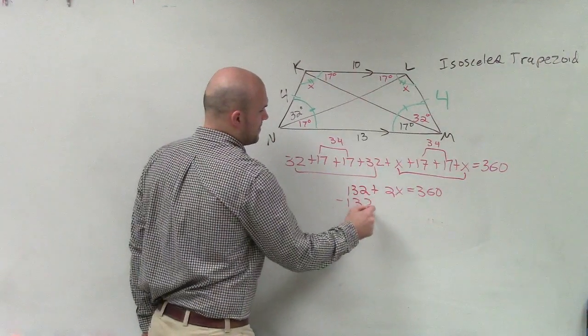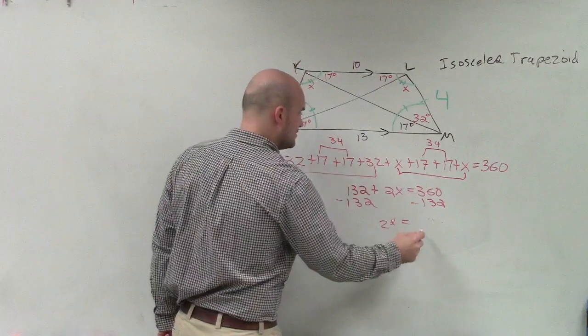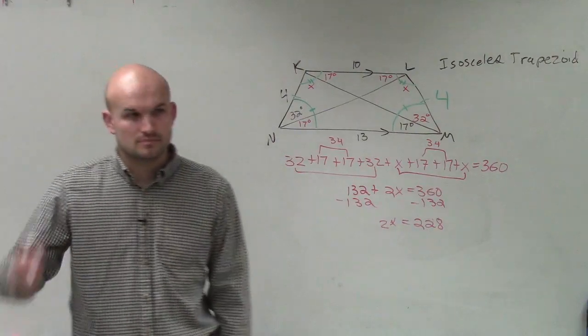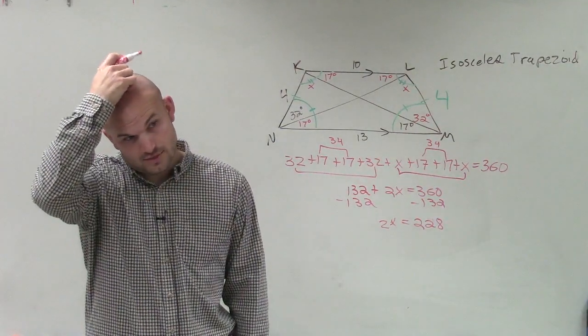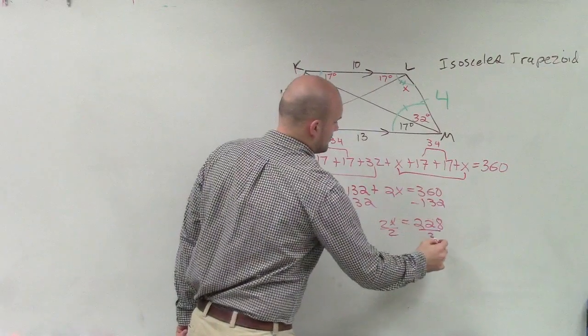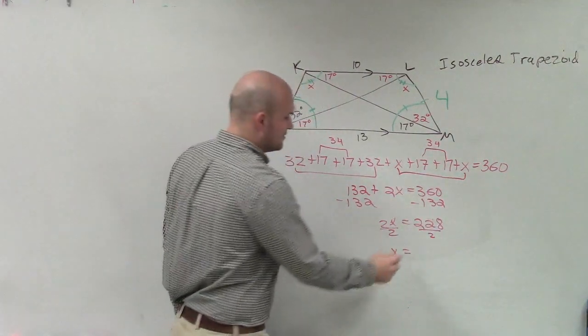Subtract 132. So now I have 2x equals 228, right? Divide by 2, x equals 114.